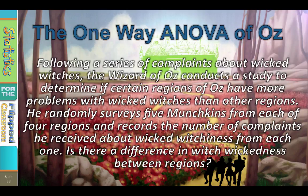Following a series of complaints about wicked witches, the Wizard of Oz conducts a study to determine if certain regions of Oz have more problems with wicked witches than other regions. He randomly surveys five munchkins from each of four regions and records the number of complaints he received about wicked witchiness from each one. Is there a difference in witch wickedness between regions?